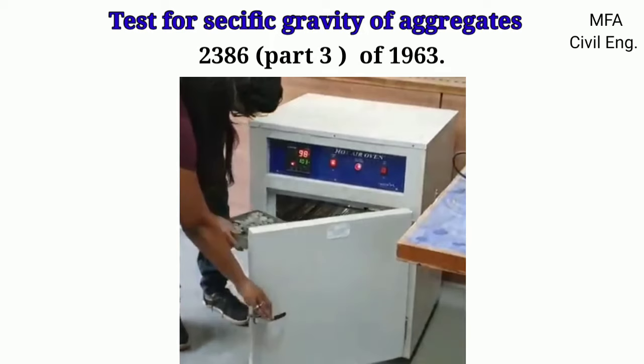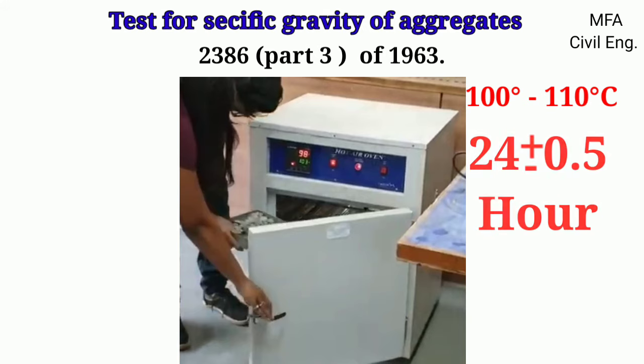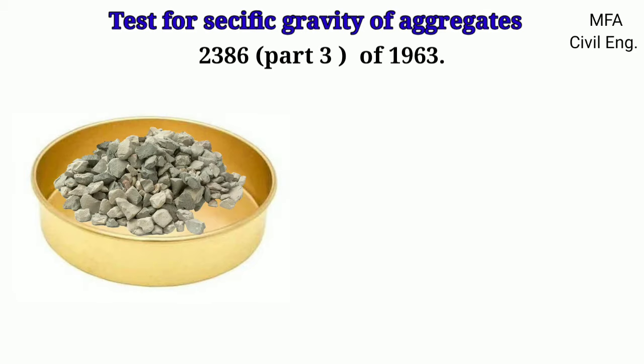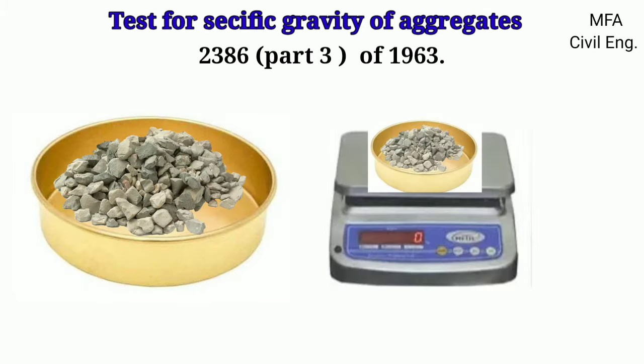Then the aggregate is kept in an oven at a temperature of 100 to 110 degrees Celsius and this temperature is maintained for a period of 24 plus minus half hour. It is then cooled in an airtight container and weighed. Let the weight be C.